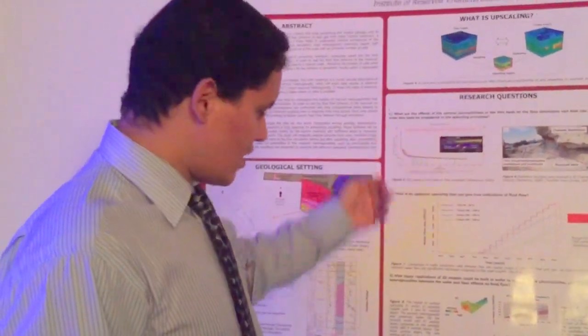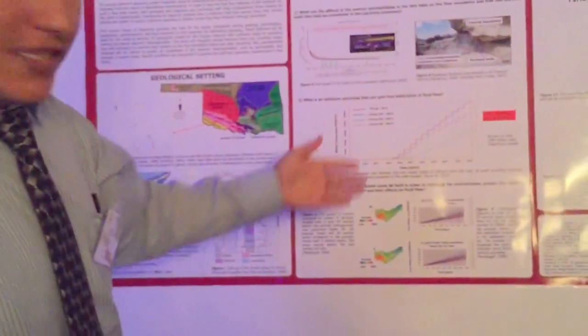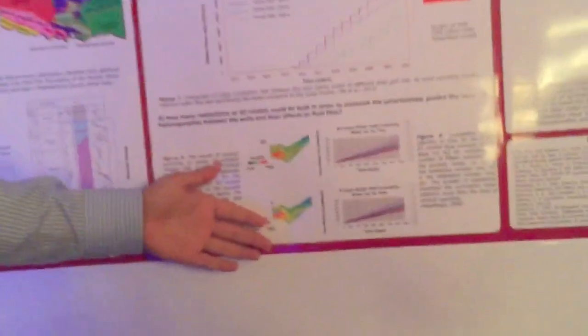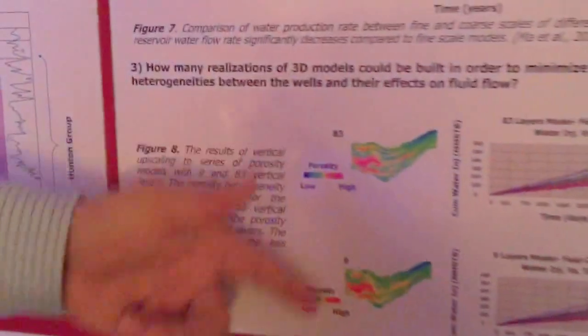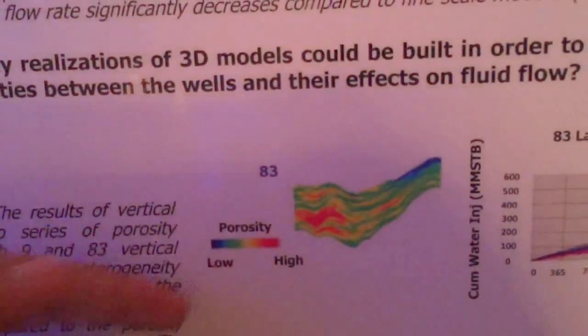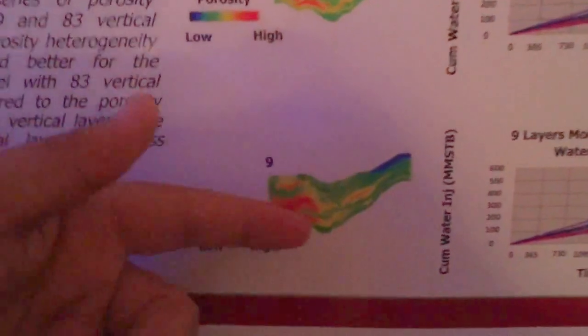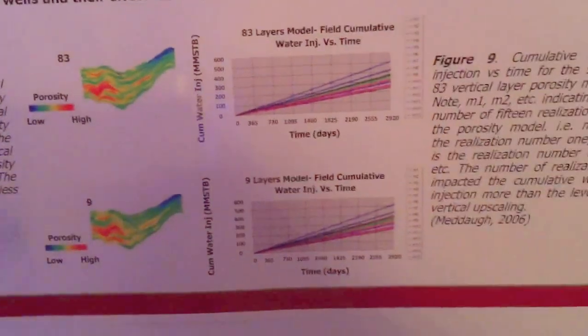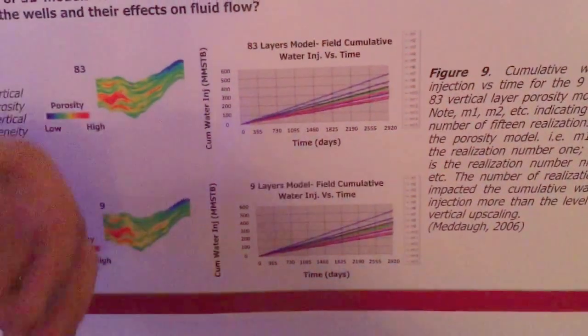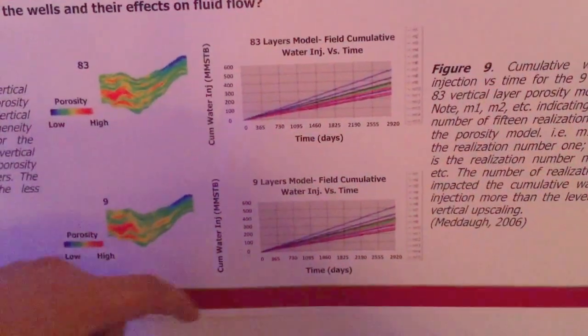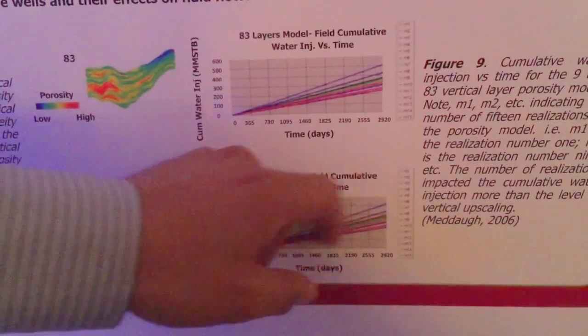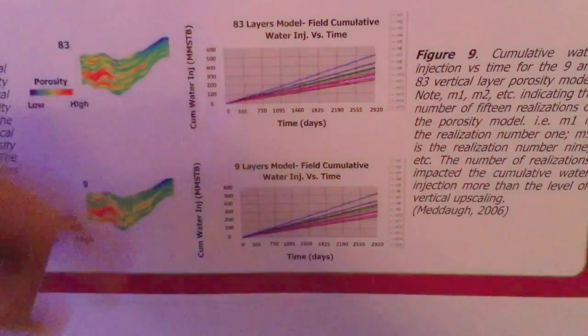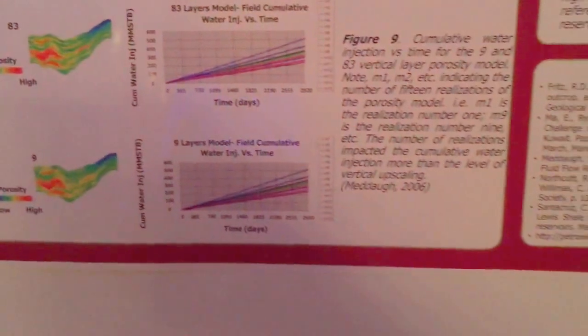So not only that, sometimes when you change the level of upscaling vertically from 9 to 8, you will have different facies representation. And also when you make statistical analysis by having different realization models, you will see here you have different response of your production. So these are the questions that I'm working on them.